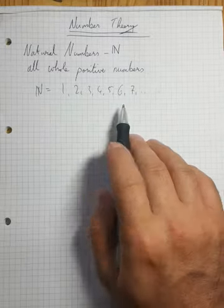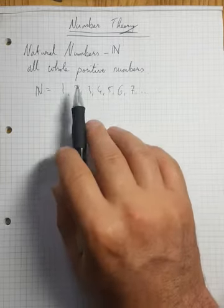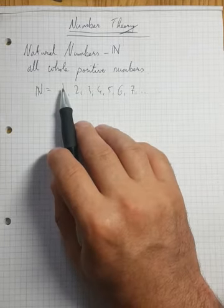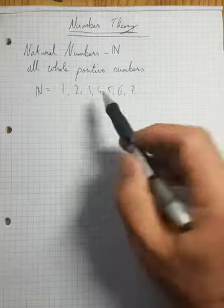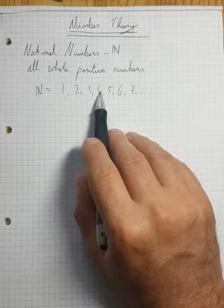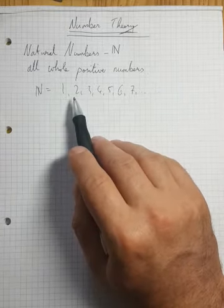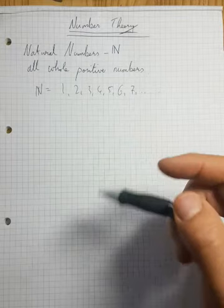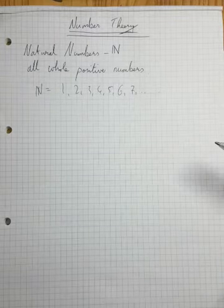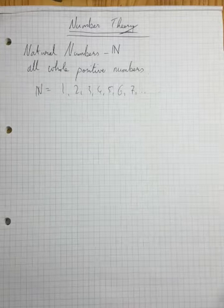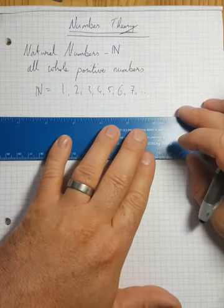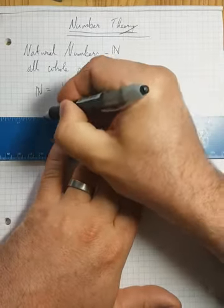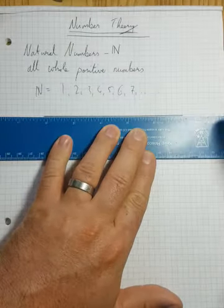There are only two types of natural numbers: even numbers and odd numbers. Even numbers are defined as any number which two will divide into evenly, and odd numbers are numbers which two does not divide into evenly.